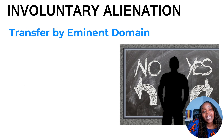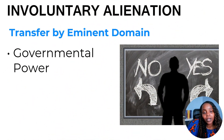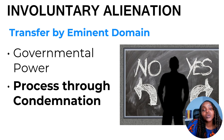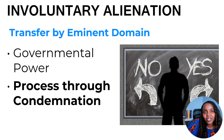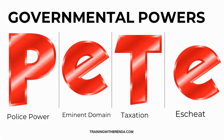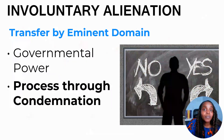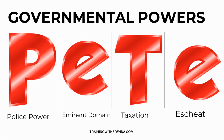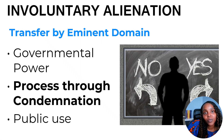Transfer by eminent domain — remember, you don't have control of this one. It's another governmental power, and here's where it goes through the process known as condemnation. There's another video that reviews governmental powers — some of you might know this with the acronym PEAT: Police power, which covers zoning and building codes; E for eminent domain, where the government takes property for public use; A for taxation, collecting money to run the jurisdiction; and then escheat, where they get the property because you have no heirs and passed away without a will.